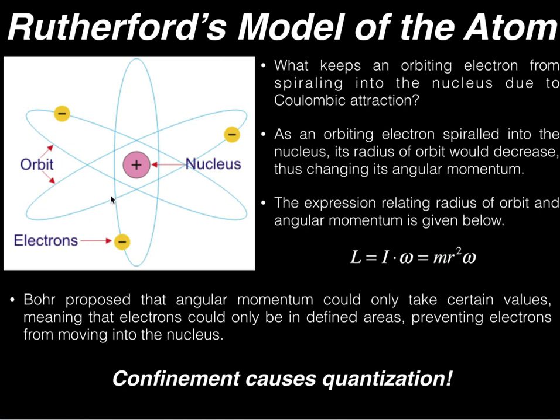One thing we can say is as an orbiting electron spiraled into the nucleus, its radius of orbit would decrease, which I think makes sense because if it's getting closer and closer to the nucleus, its radius of orbit is decreasing.